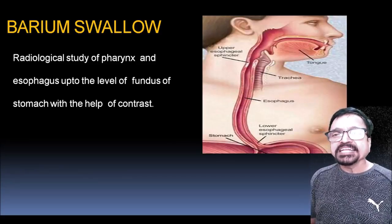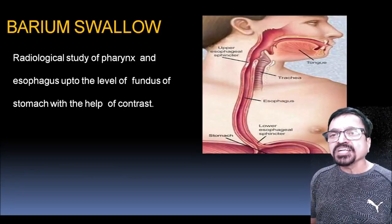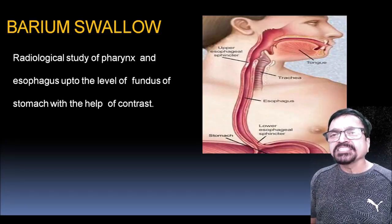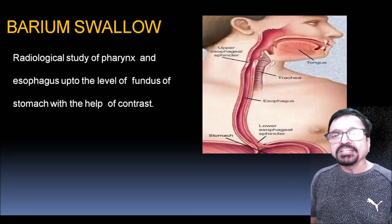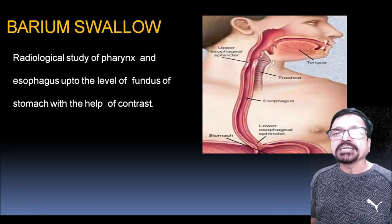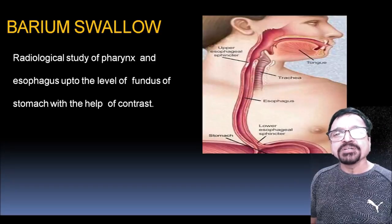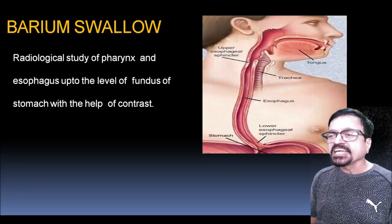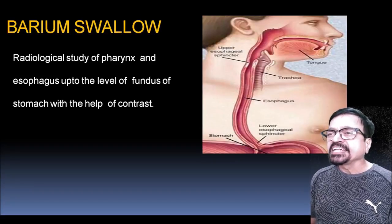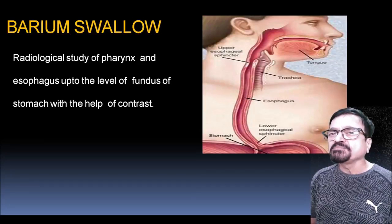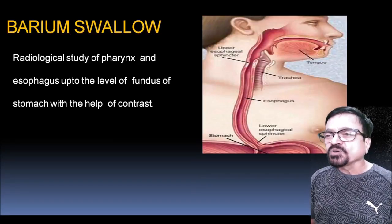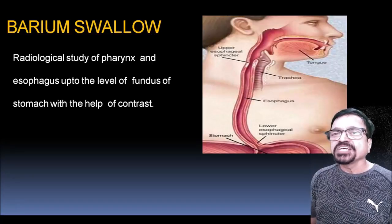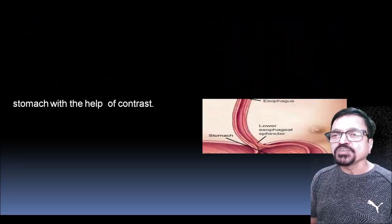Barium is one of the best contrast media for esophageal coating and gives valuable information. The barium examination can be done in any radiology department — only fluoroscopy is needed to observe peristalsis. Today's concentration is on the radiological examination of the pharynx and esophagus up to the level of the gastroesophageal junction.